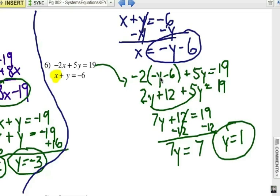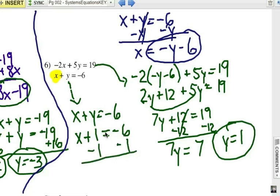And now I go ahead and substitute my y equals 1 value into either equation. Well, that's going to be pretty easy because if this is x plus y equals negative 6, I know that y is supposed to be a positive 1. So x plus 1 equals negative 6. I want to subtract 1 from each side. And so x must be negative 7.